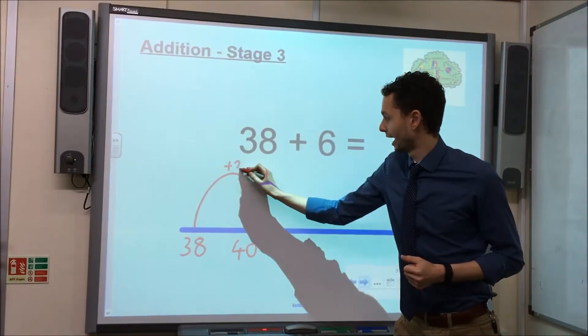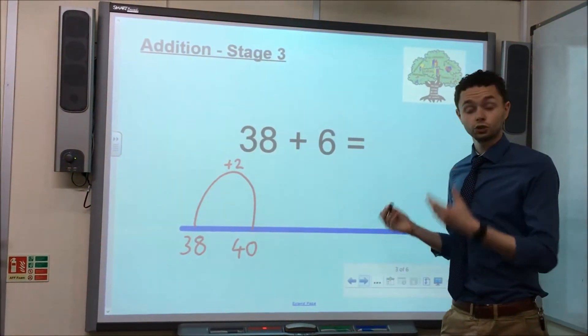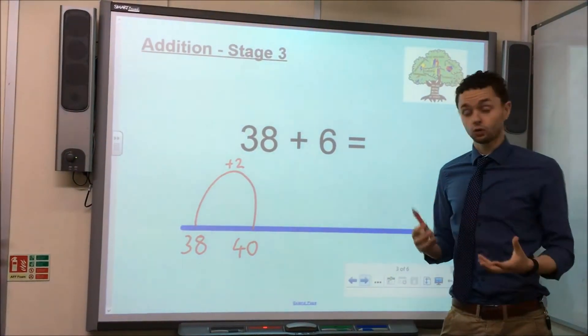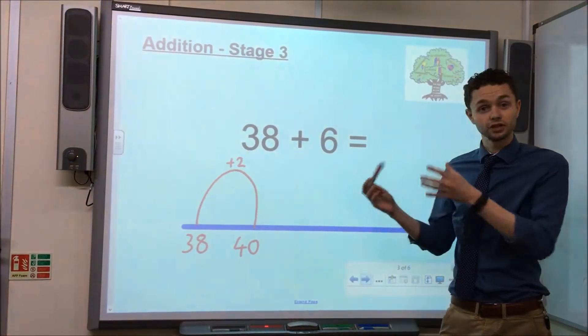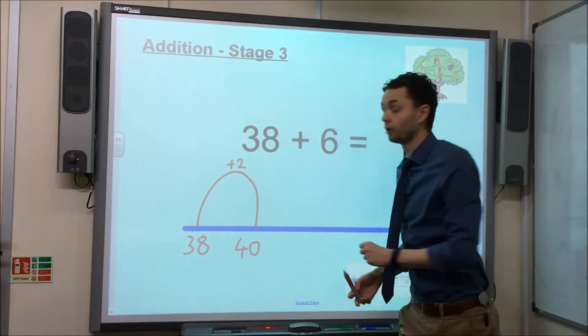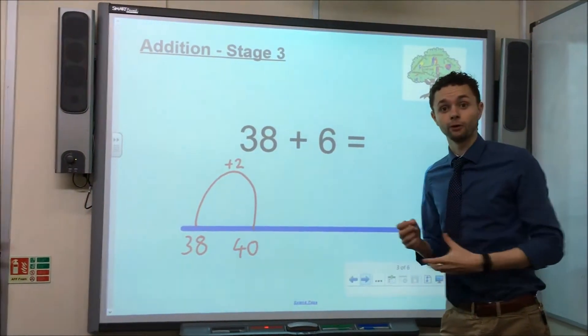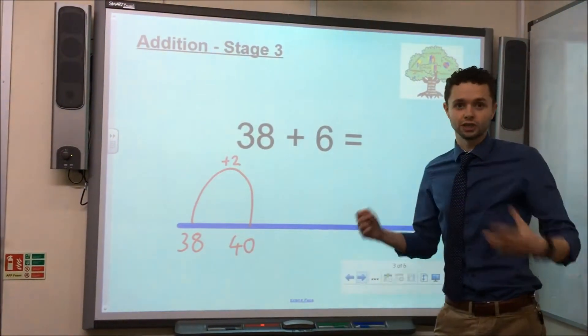So, at the top, we record add 2. Now, children using this method should be able to quickly look at the calculation and see, I need to add 6, but at the moment I've only added 2. I can find the difference between 6 and 2, which is 4.